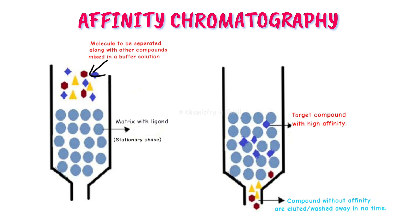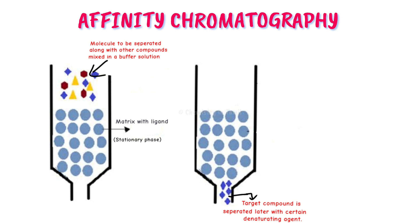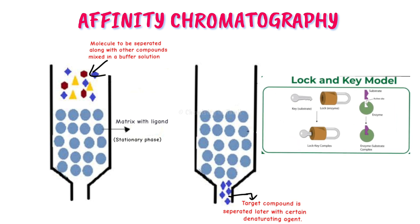After binding, we collect the enzyme-substrate complex. To elute the target molecules, we add a mild denaturing agent to disrupt the complex formation. In affinity chromatography, the lock and key model of enzyme-substrate interaction is the basis — the substrate fits specifically into the active site due to high affinity. Similarly, there is high affinity between antibodies and antigens.